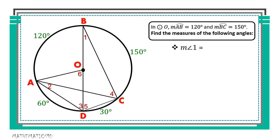First, find the measure of angle 1. Angle 1 is the same as angle DBC, which is an inscribed angle. The intercepted arc of this inscribed angle is arc CD, which is 30 degrees. Applying the inscribed angle theorem — the measure of the inscribed angle is one half the measure of its intercepted arc — the intercepted arc of angle 1 is arc DC, so we get half of 30 degrees, which is 15 degrees.